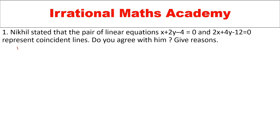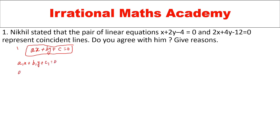Nikhil stated that the pair of linear equations x plus 2y minus 4 equal to 0 and 2x plus 4y minus 12 equal to 0 represents coincident lines. Do you agree with him? Give the reasons. Before starting, we need to know a linear equation is represented by ax plus by plus c equal to 0. If we have two linear equations: a1x plus b1y plus c1 equal to 0, and a2x plus b2y plus c2 equal to 0.